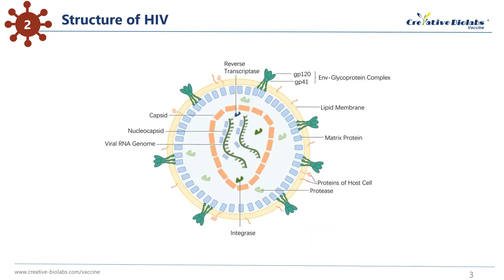The human immunodeficiency virus is about 120 nanometers in diameter and roughly spherical in shape. The lipid membrane is a fat bilayer that is recruited from the cell membrane of the cell a new virion buds from, and it accounts for about 30% of the total weight of the virion, and contains all of the virion's components except the glycoprotein spikes named GP160.